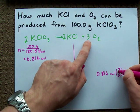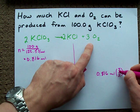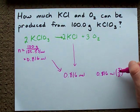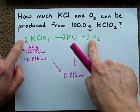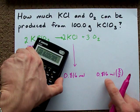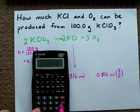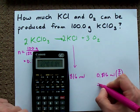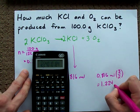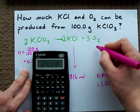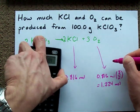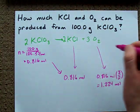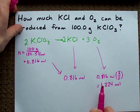We actually end up with 1.5 times as much oxygen as we started with of KCl. So, I'm going to do times 3 divided by 2, and we end up with 1.224 moles of oxygen. Notice, this is a 2 to 3 ratio, and this is a 2 to 3 ratio.